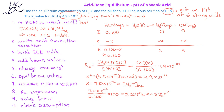Now that we've confirmed our value for the equilibrium concentration of hydronium is correct, we can plug this value into the pH equation. So pH equals the negative log of 7.0 times 10 to the negative 6, and when we calculate this, we see that the pH of a 0.100 molar HCN solution is 5.15.